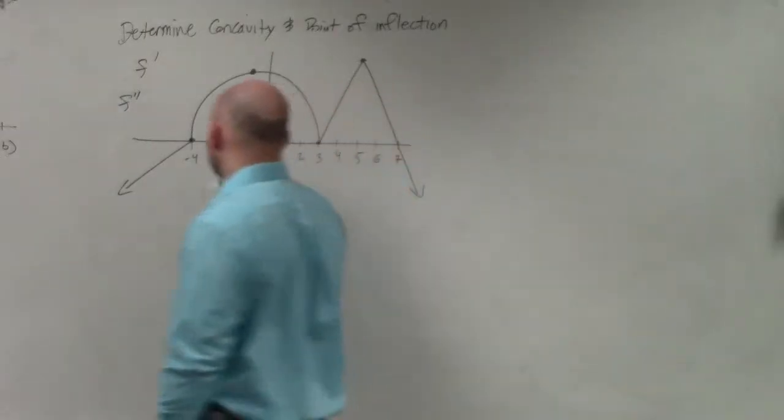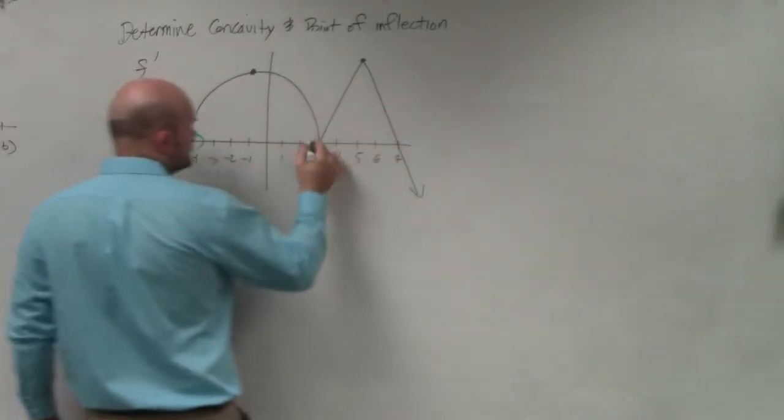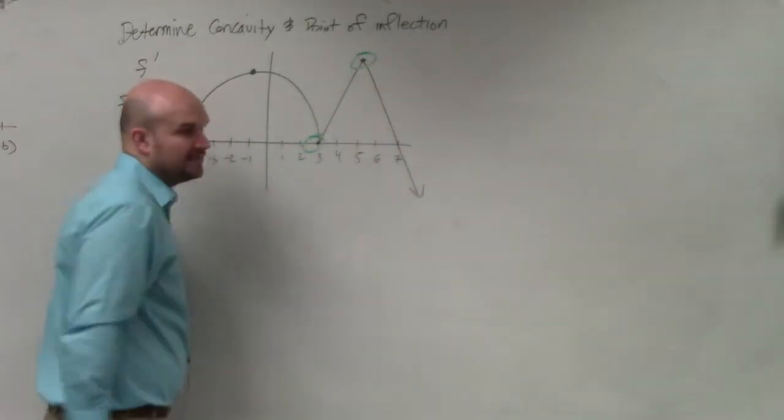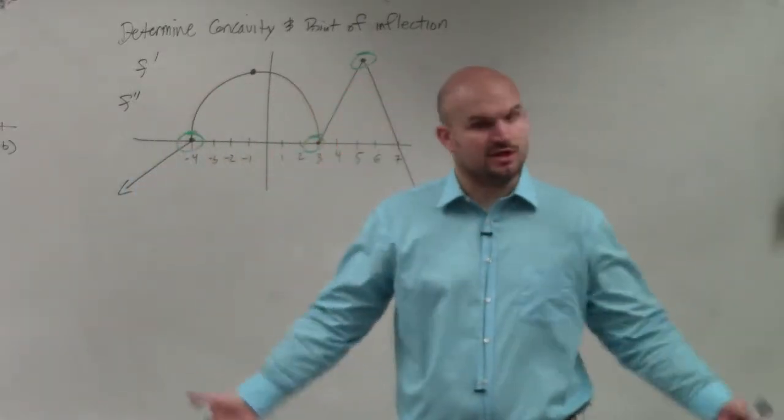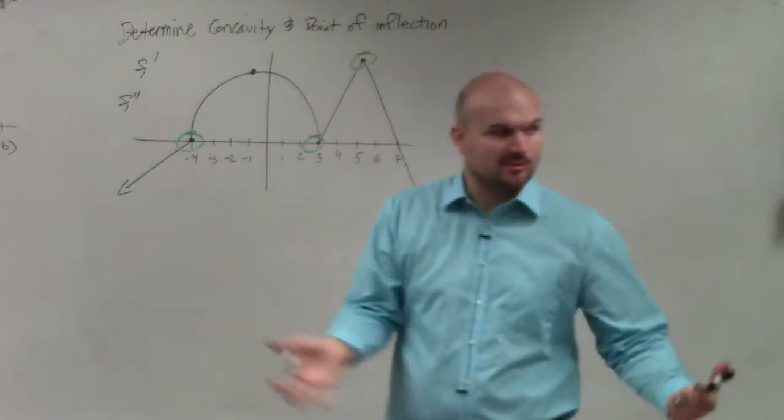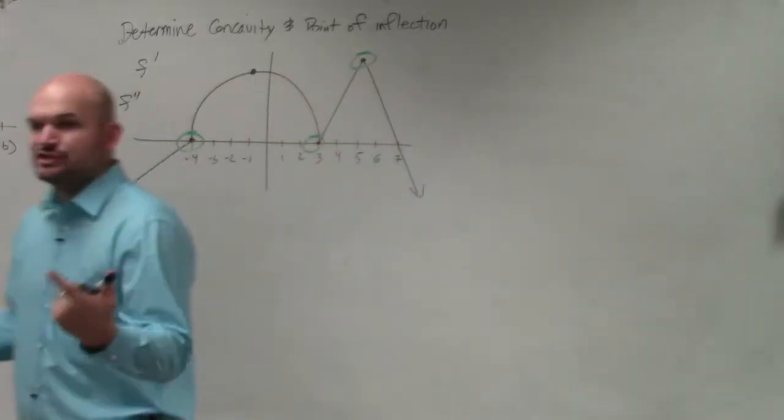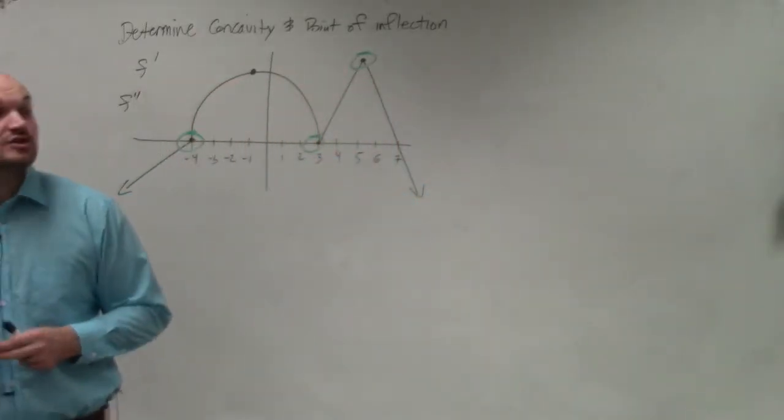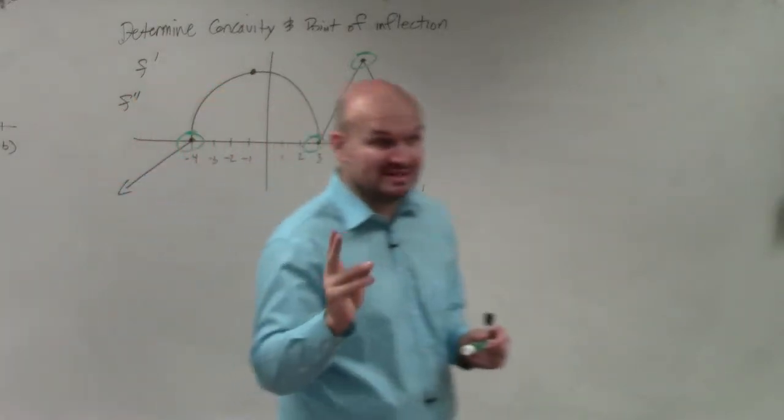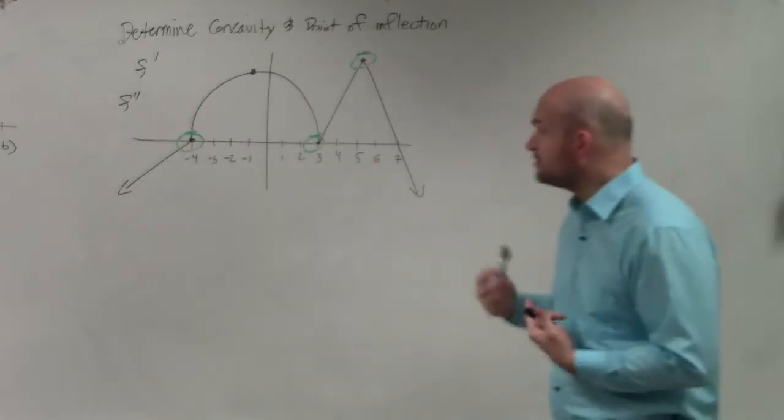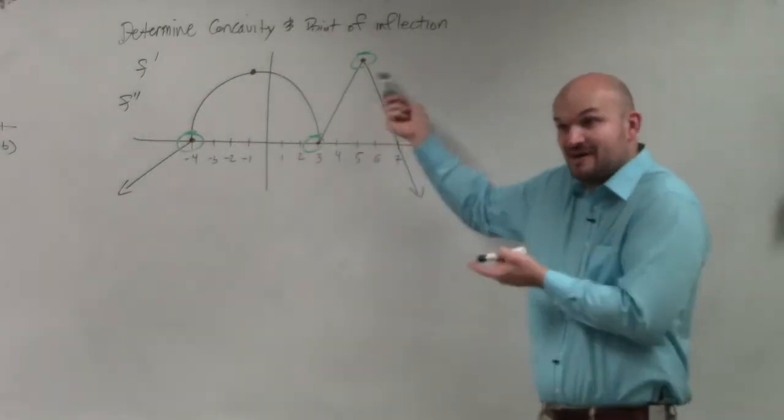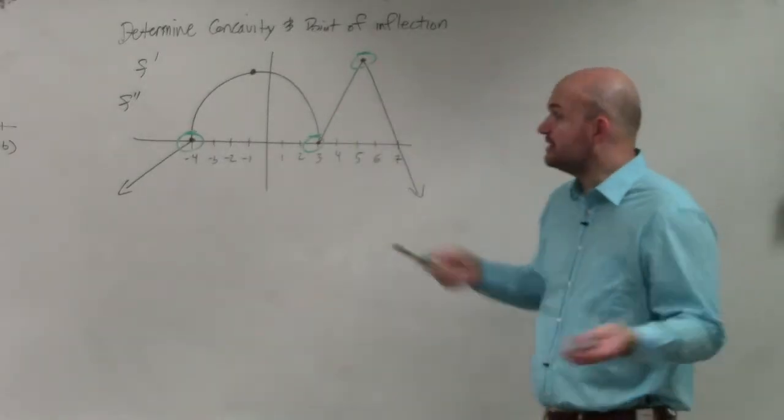First of all, we can't take the derivative of those kind of three points, because you could say we have a corner or a cusp at those three points. So if we're given f prime and we want to find f double prime, we wouldn't be able to differentiate at those points. So those are possible points of inflection. Those are going to be our possible points of inflection, because we can't differentiate. It's undefined at those points.